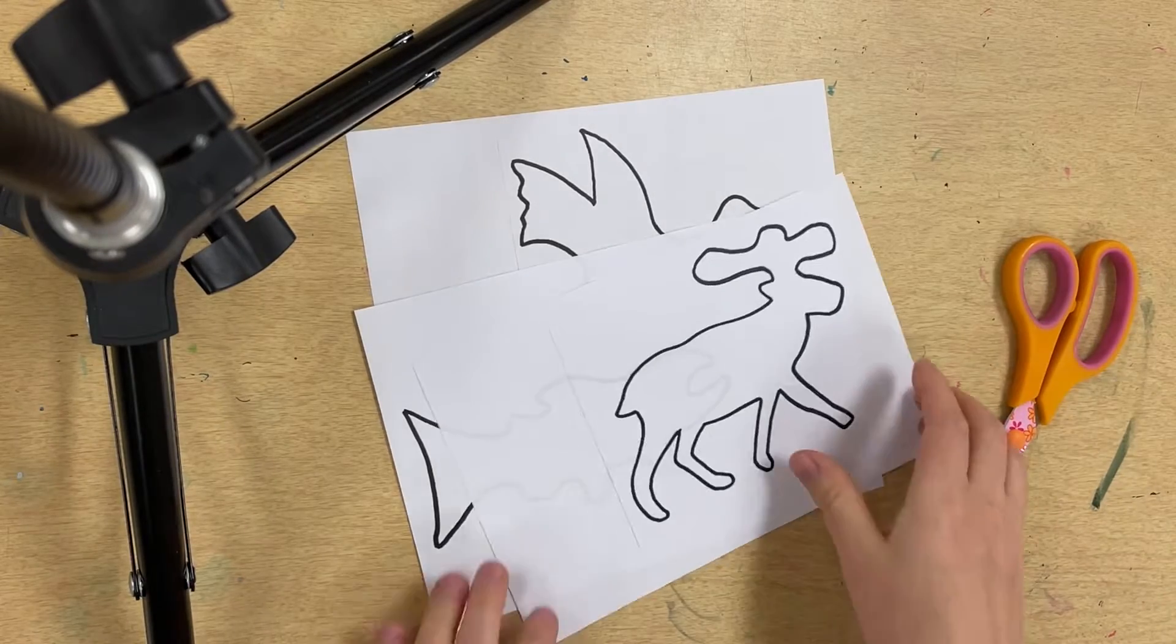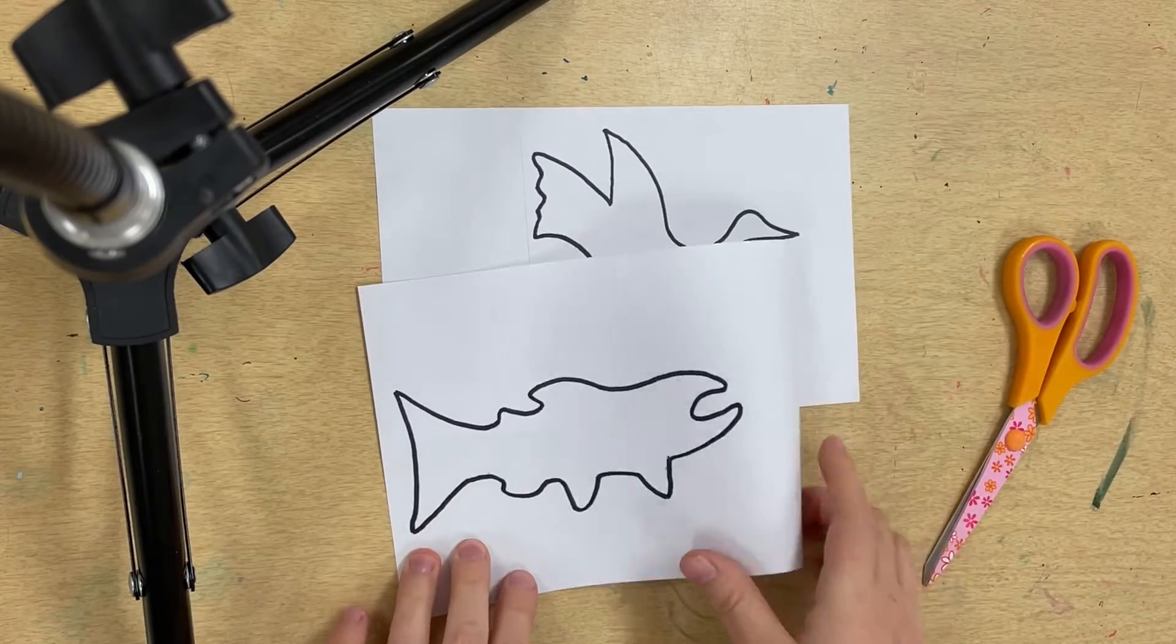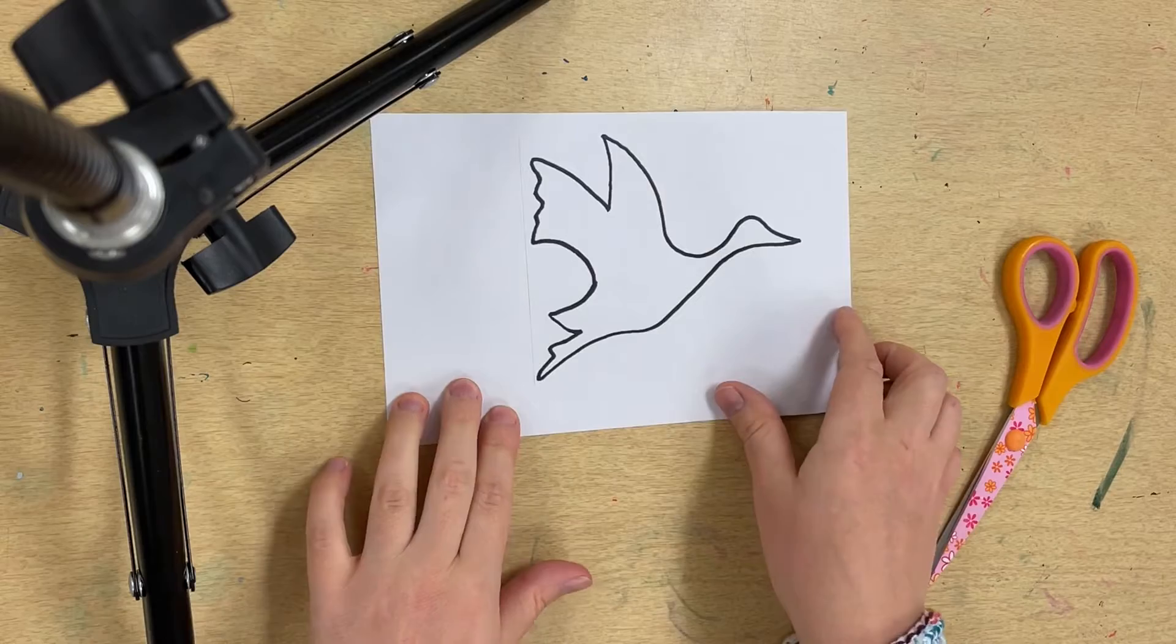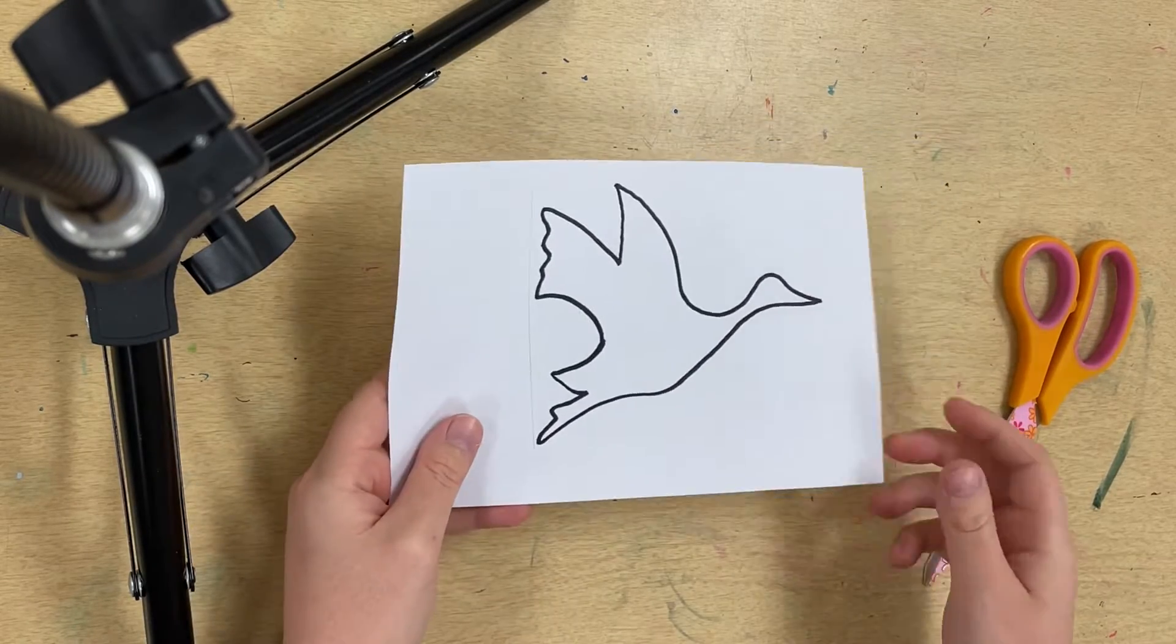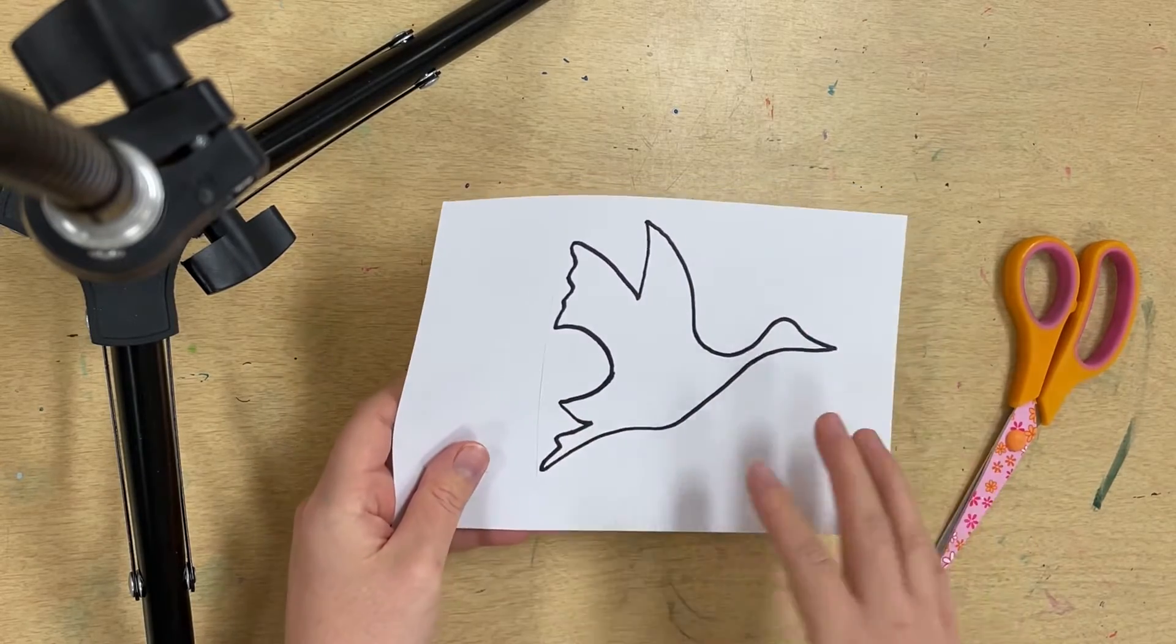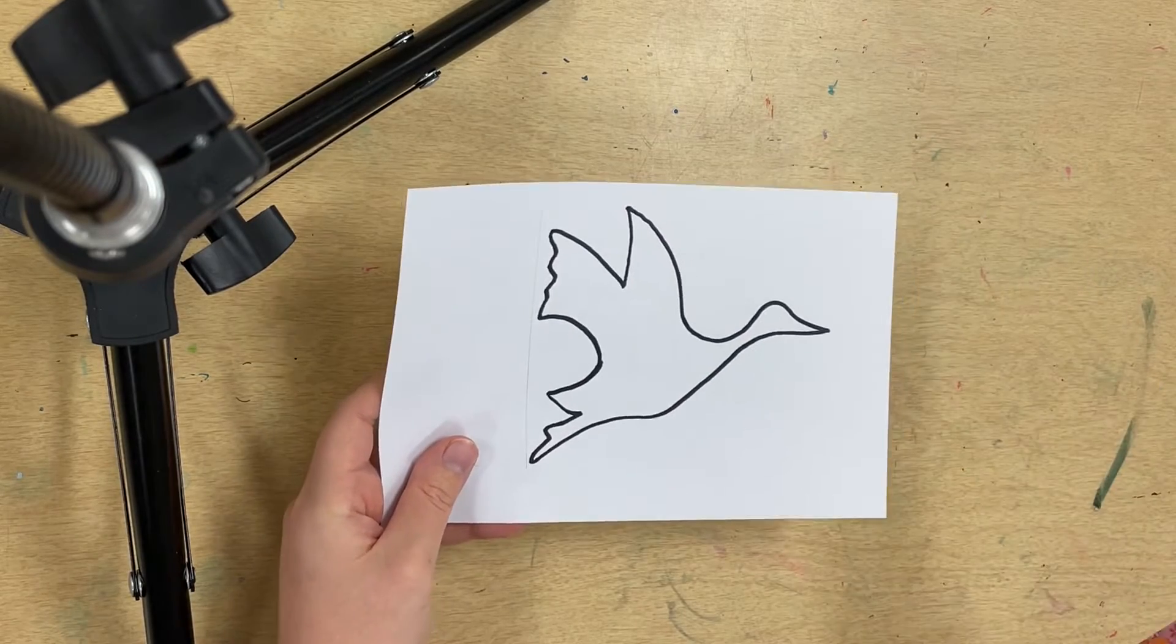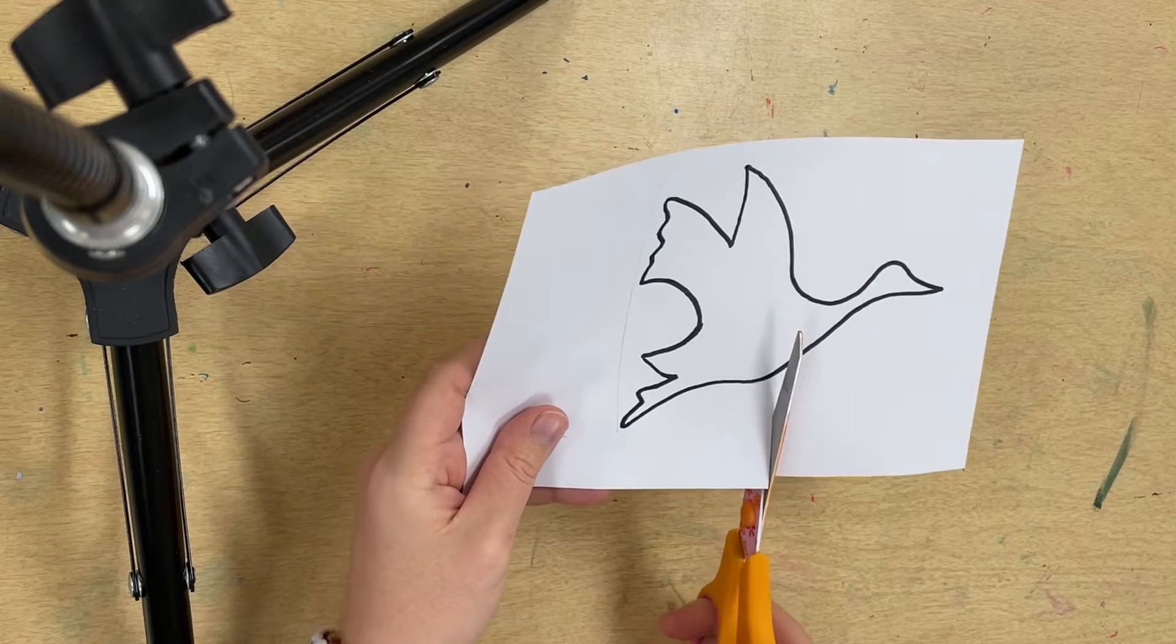For our migrating animal mixed media project, you can choose a caribou, a salmon, or a crane to make a stencil from. I'm going to choose a crane. You want to cut out the shape of your animal while also preserving the negative space. We're going to make two different kinds of stencils: a positive space stencil and a negative space stencil.